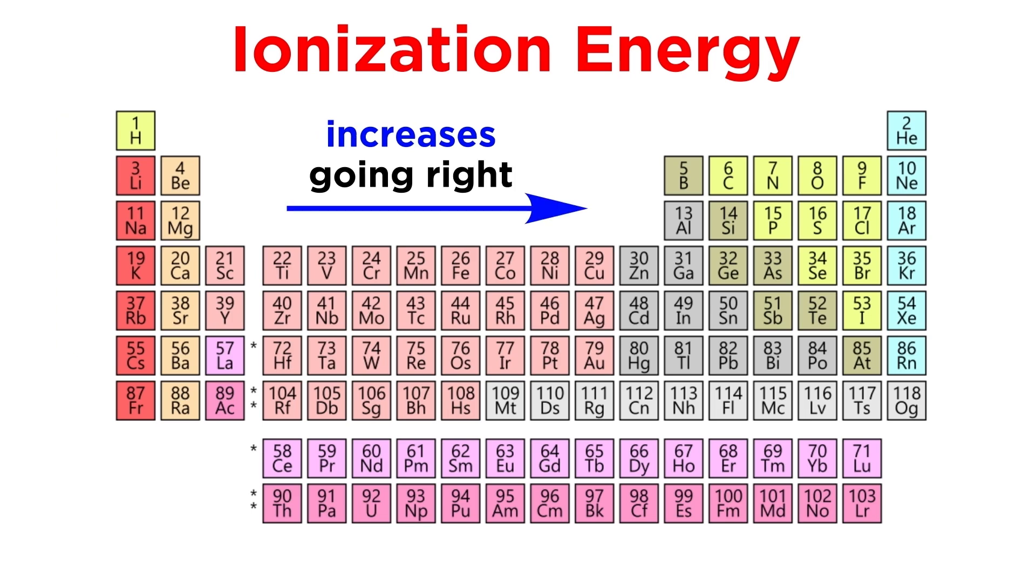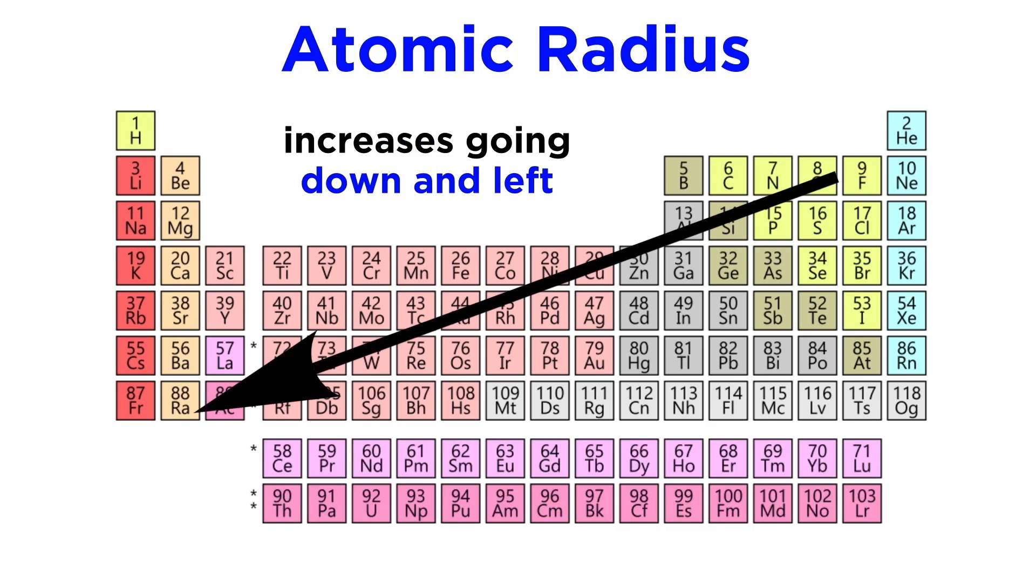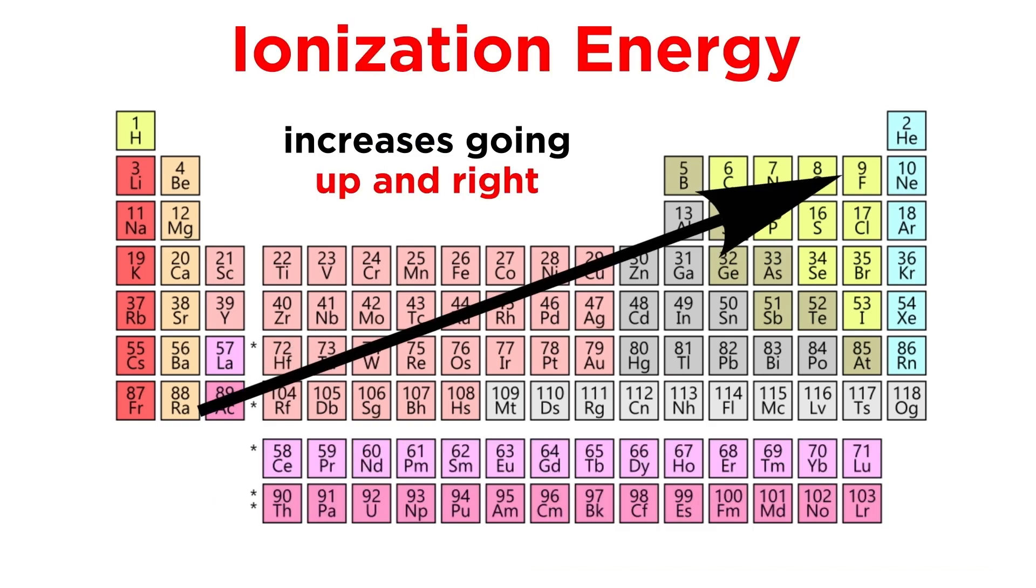Since atomic radius also decreases going to the right within a period, we can expect the ionization energy to increase at the same time. As we go, we are adding protons, contracting the radius, and holding electrons more tightly, so they are harder to remove. That means in general, while atomic radius increases down and left, ionization energy will increase up and right, precisely the opposite of the radius trend.